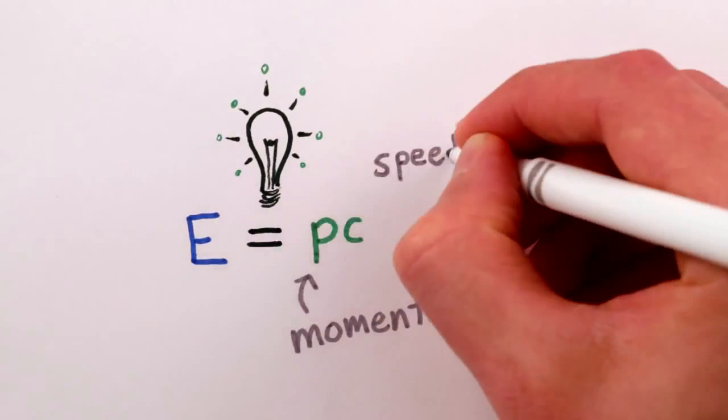This tells us that the energy of a massless particle, like a photon of light, is the same as its momentum, up to a factor of the speed of light.